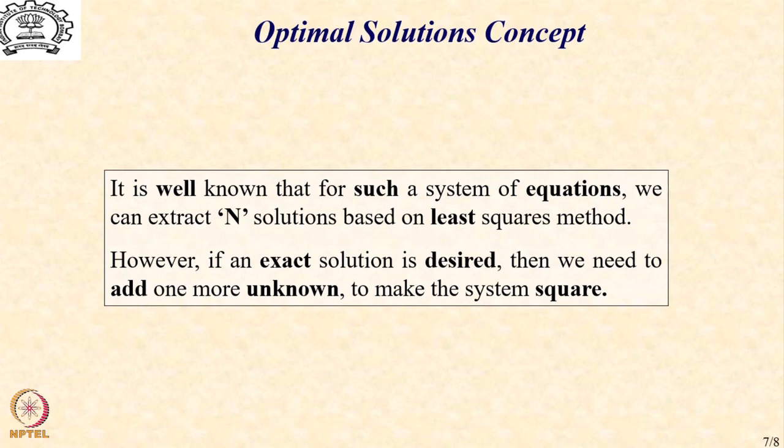The other possibility is that can I add one more unknown. So, that we now have n plus 1 unknowns for n plus 1 equations that becomes our square system and we get an exact solution for all the n plus 1 variables hoping that among that the n required design variable solution is also exact.